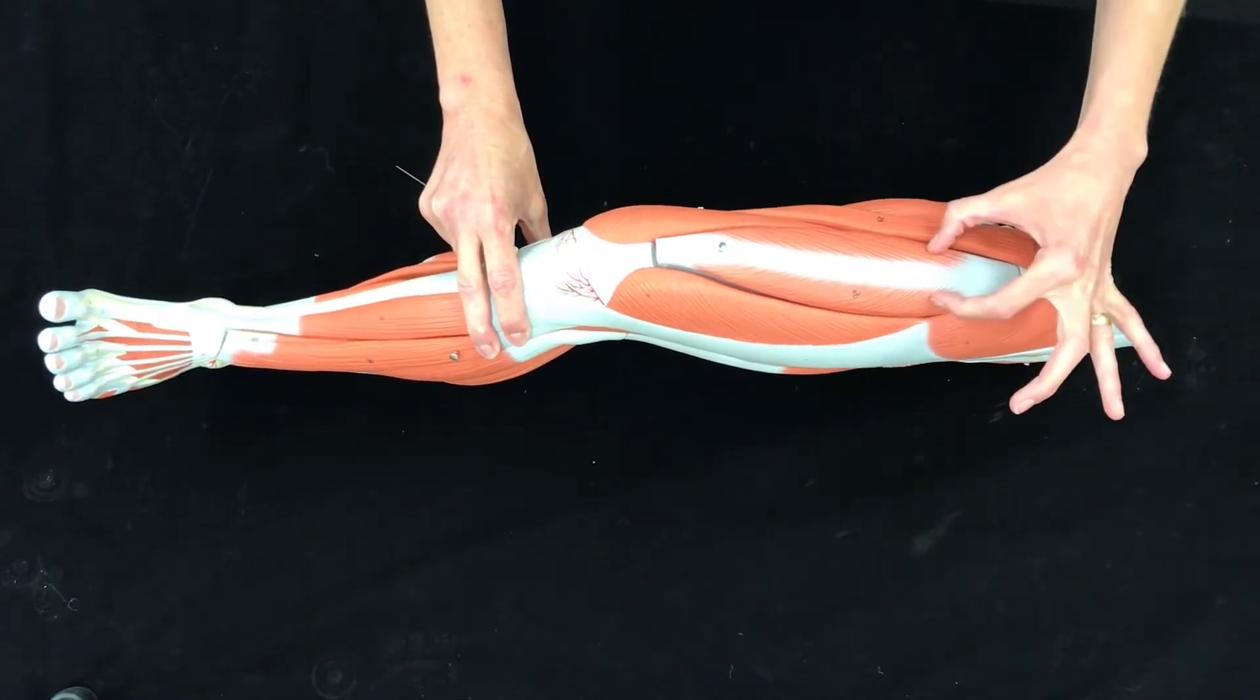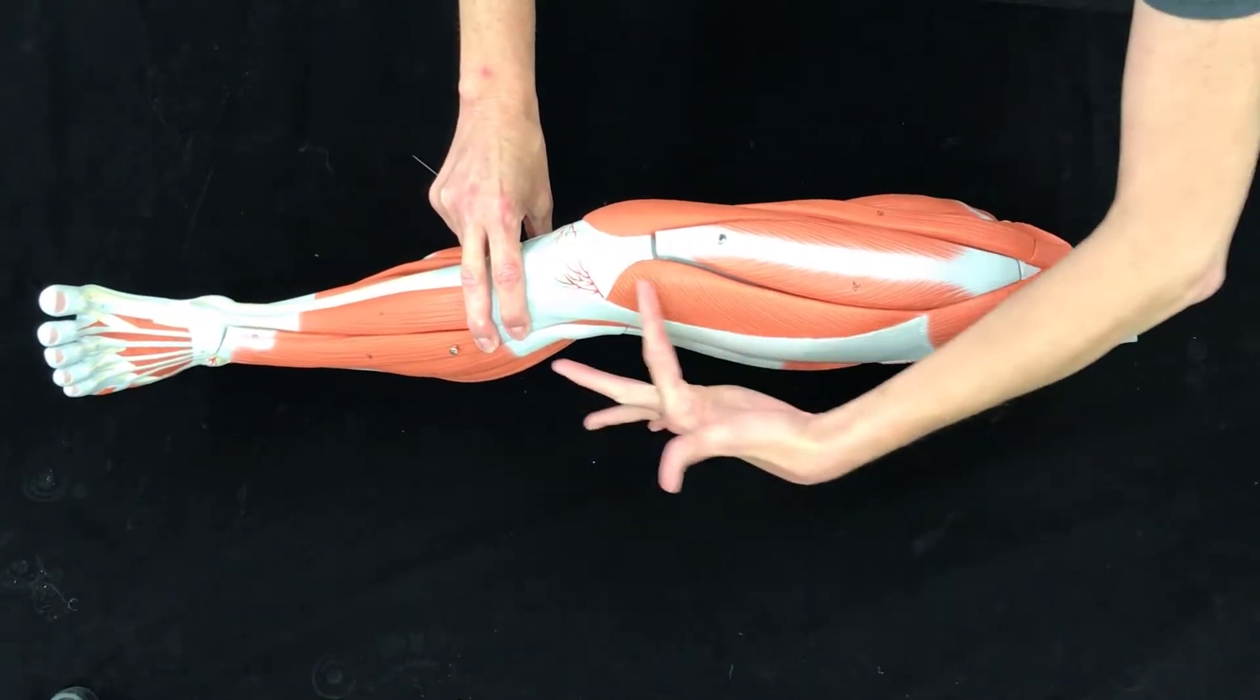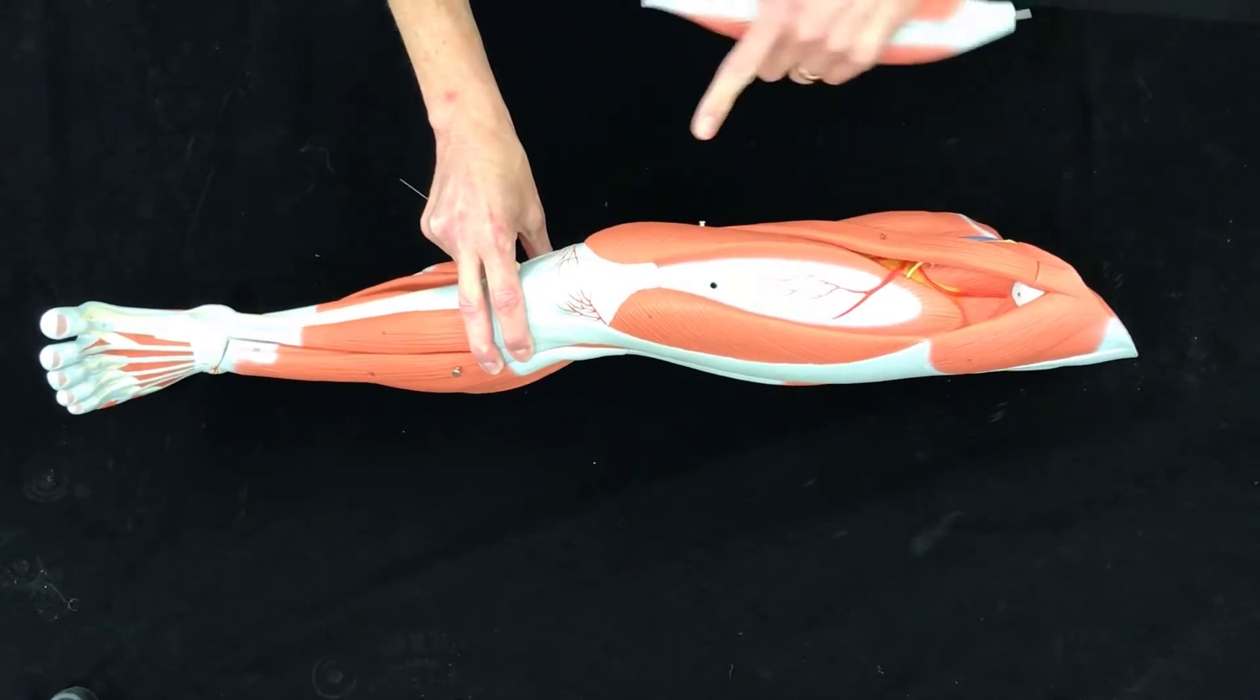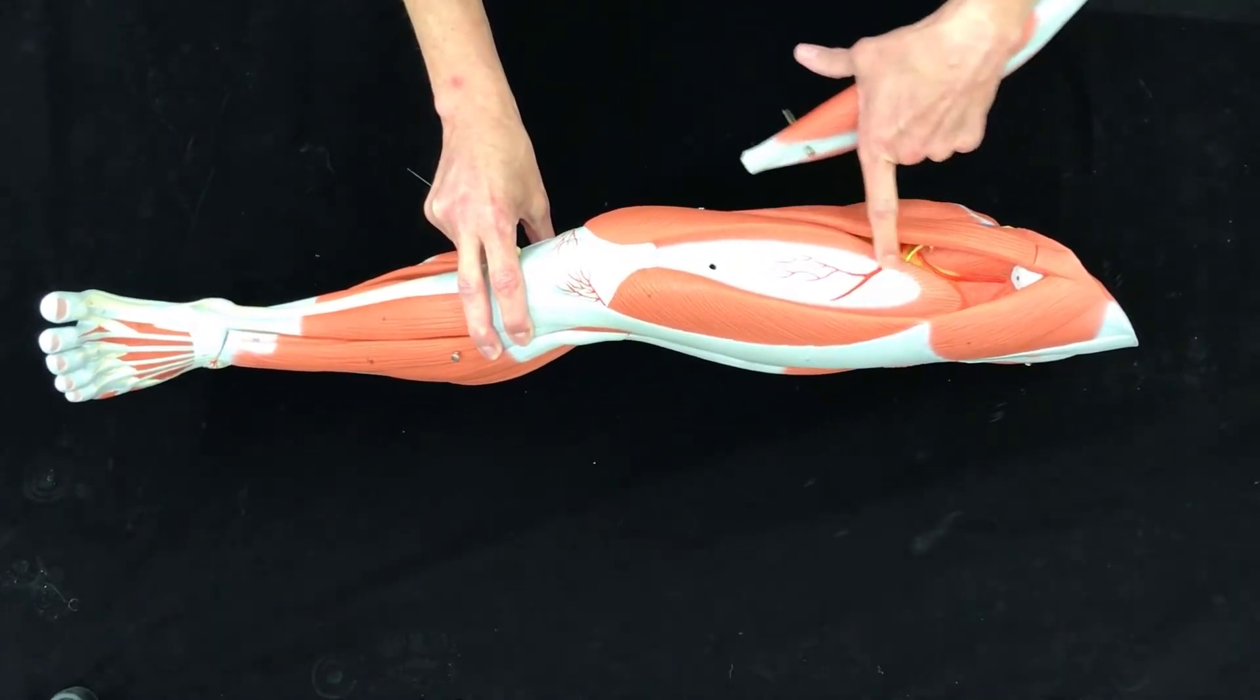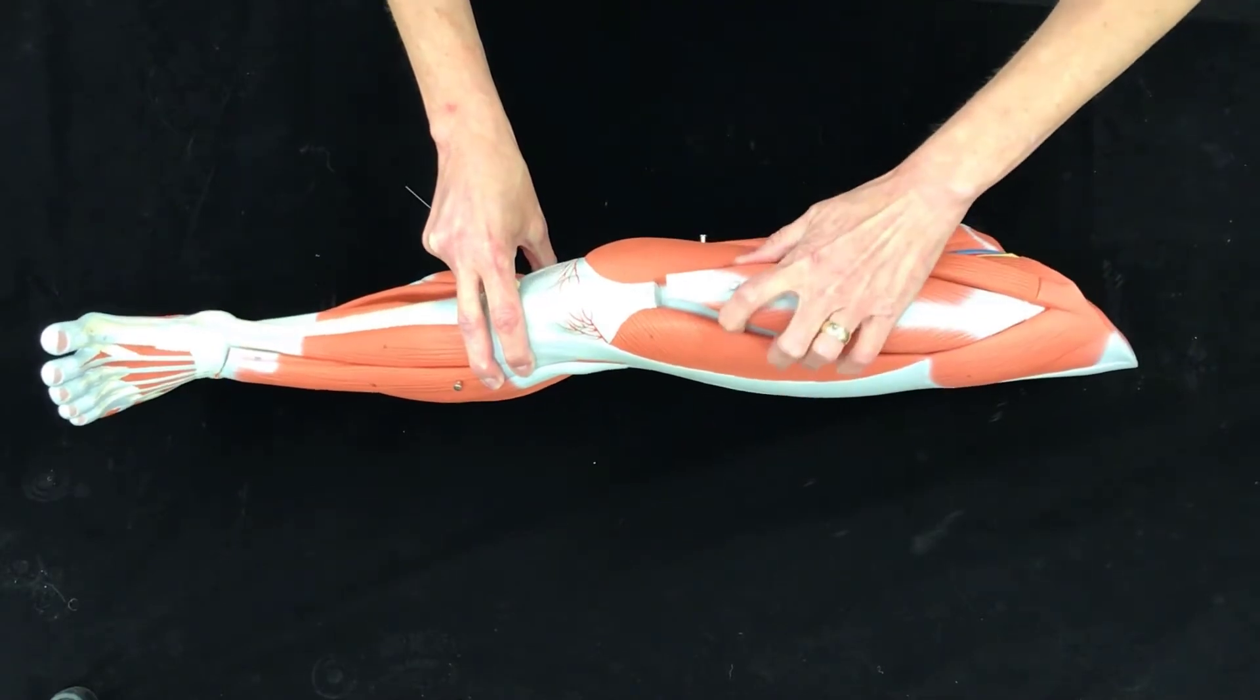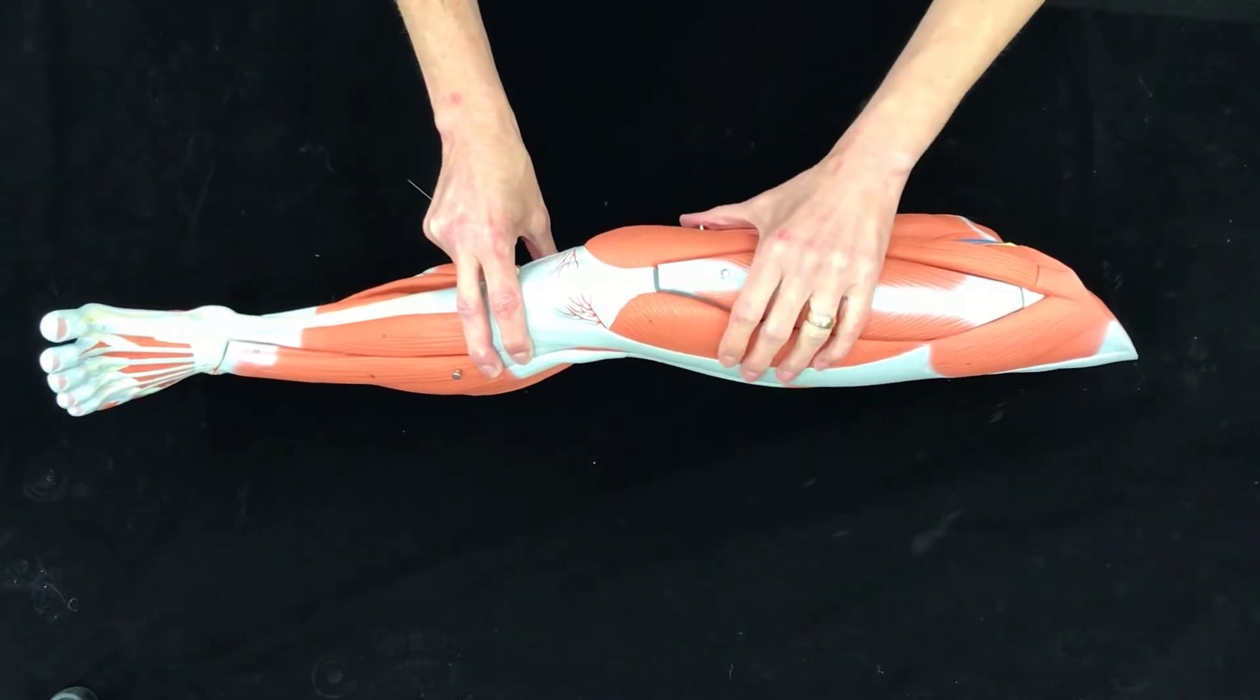You had your rectus femoris, vastus medialis, vastus lateralis, and then underneath the rectus femoris you had the vastus intermedius. So again, this muscle group is the quadriceps.